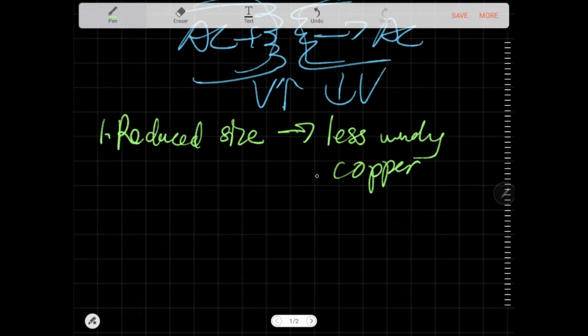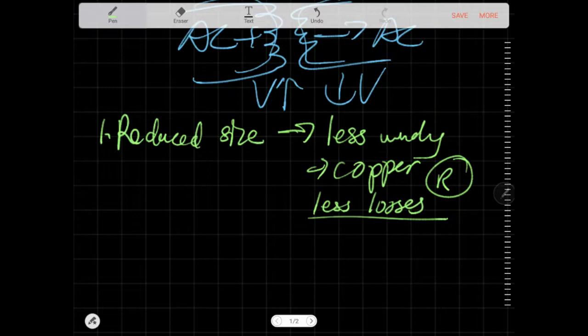You can save some copper. And less copper means less losses. Because copper is just resistive part of the component. And when it's less losses, that's more efficient, in a sense. So reduced size.